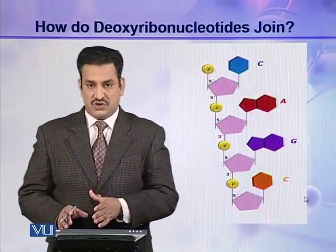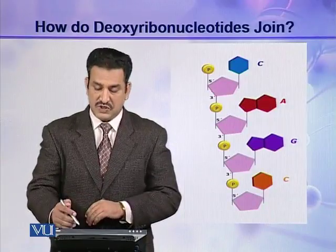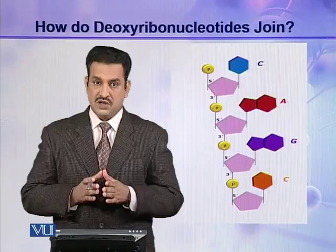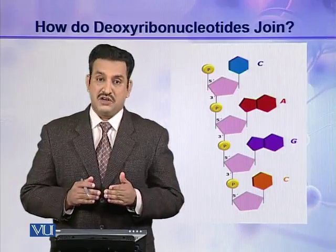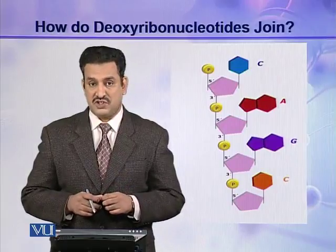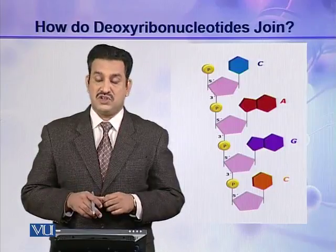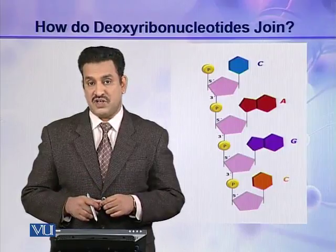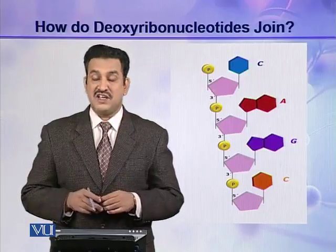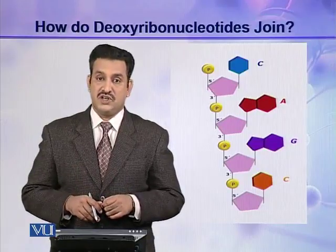Look at this picture — this is a polynucleotide chain where the nucleotides are linked together through phosphodiester linkage. If a chain contains 50 or fewer deoxyribonucleotides, it is called an oligonucleotide chain. If the chain contains more than 50 deoxyribonucleotides, it is called a polynucleotide chain. As you know, DNA is a polynucleotide chain, and in this way a polynucleotide chain is formed.